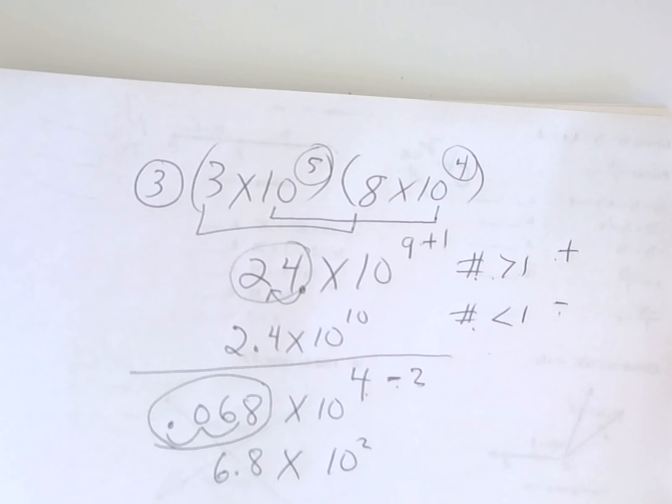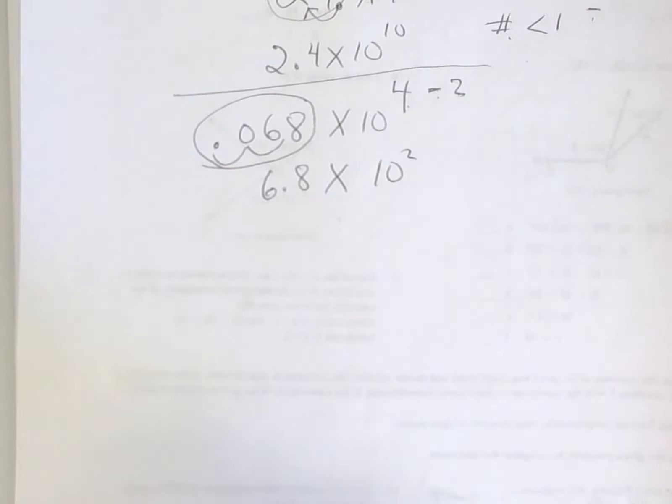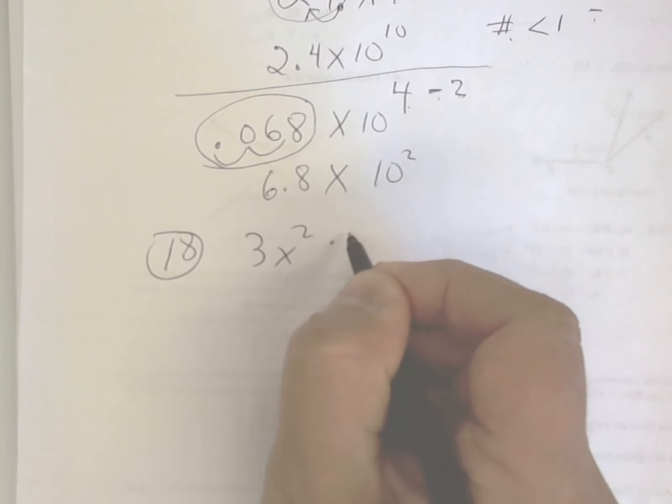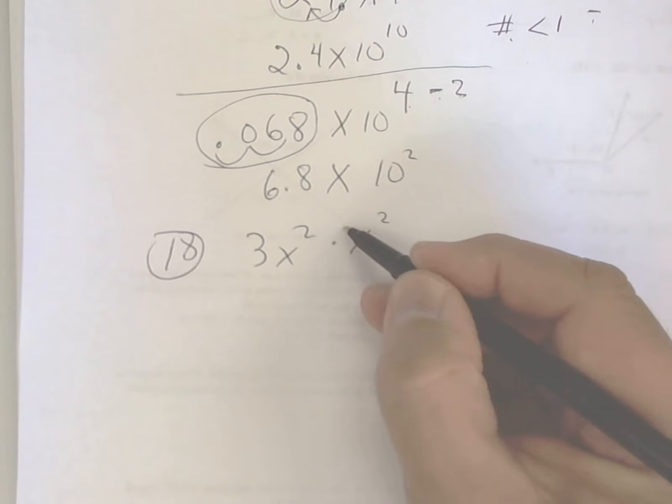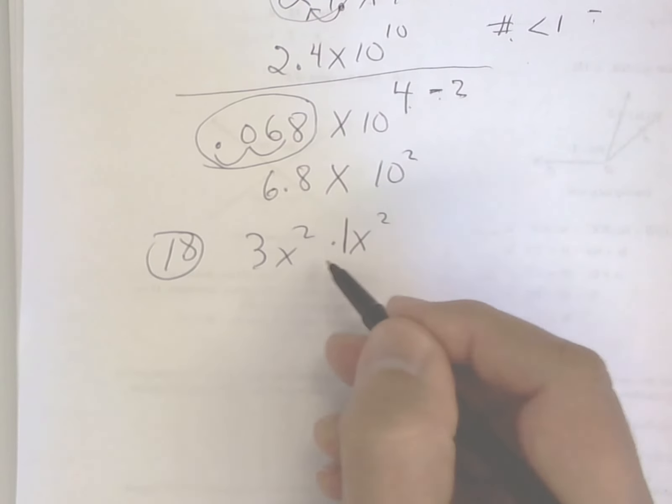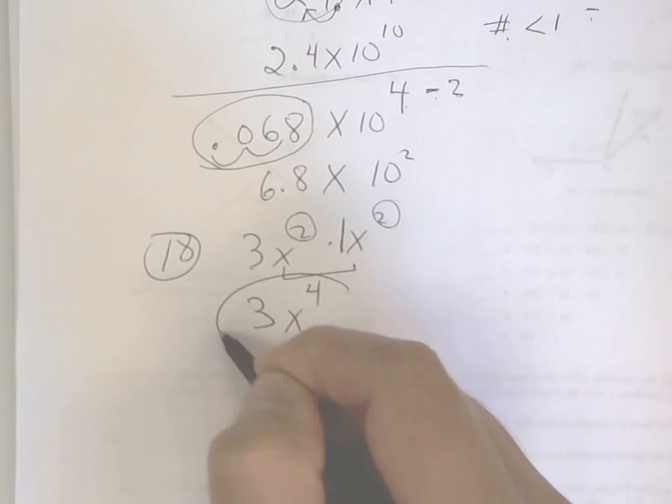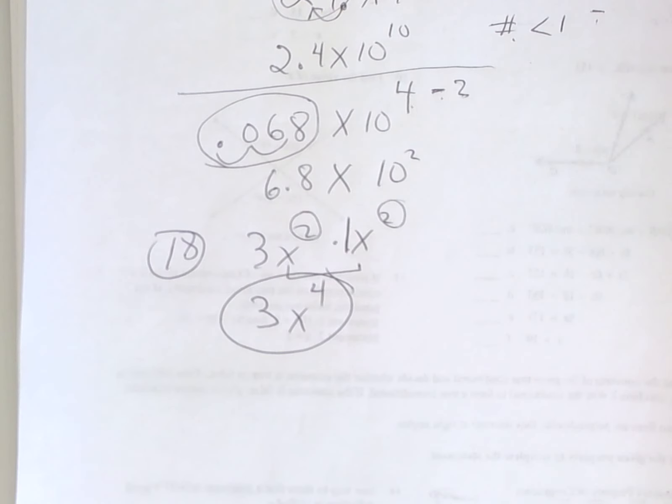How about number 18 on the same page? Okay. Here you're multiplying. Now watch this carefully. Put a 1 right here. 3 times 1 is 3. You got the same base, so you add these up. And you're done. No big deal. What else do you need help with?